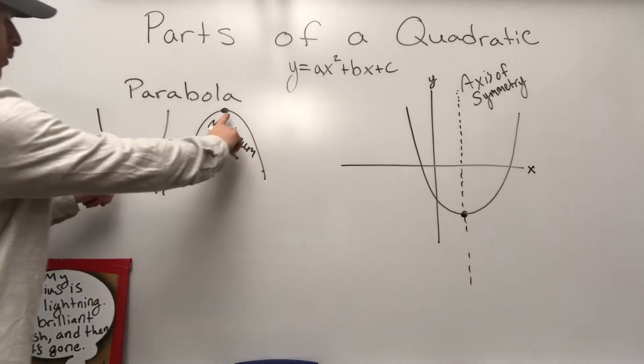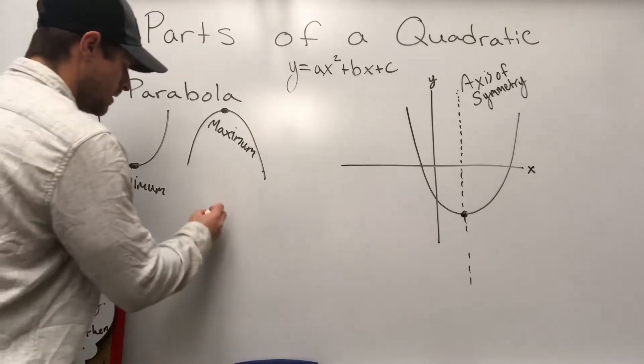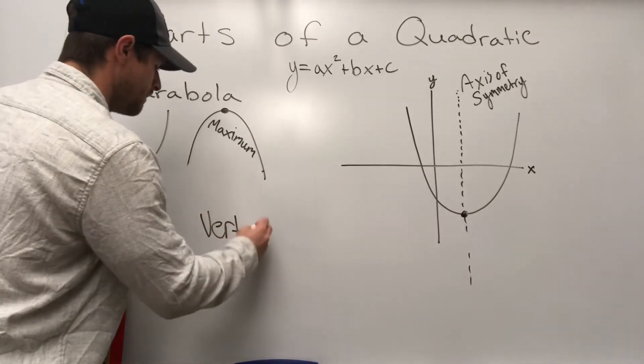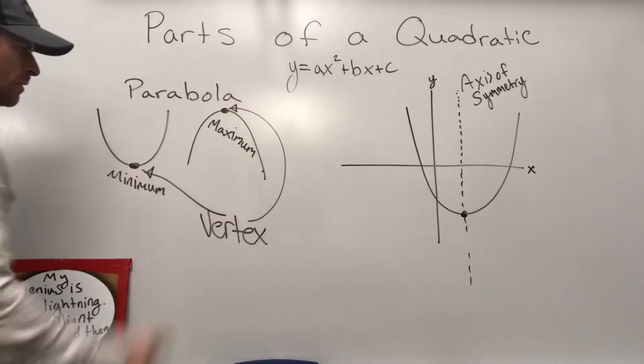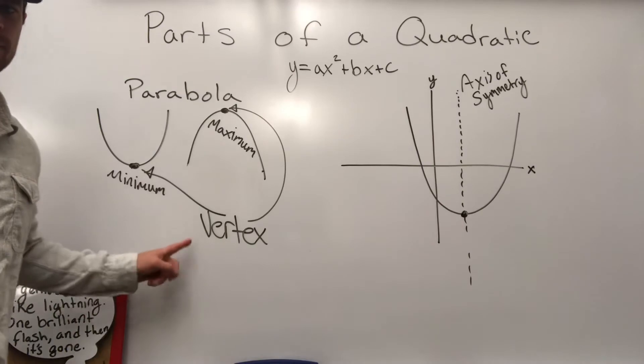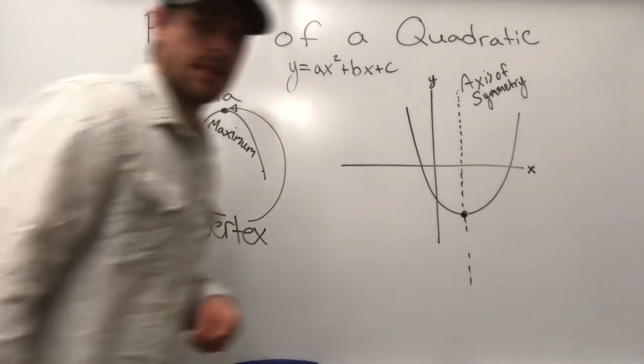But the high or the low point of a parabola has a definition of or a term of vertex. The vertex is the high or the low point of the parabola. Vertex is the high or the low point of a parabola.